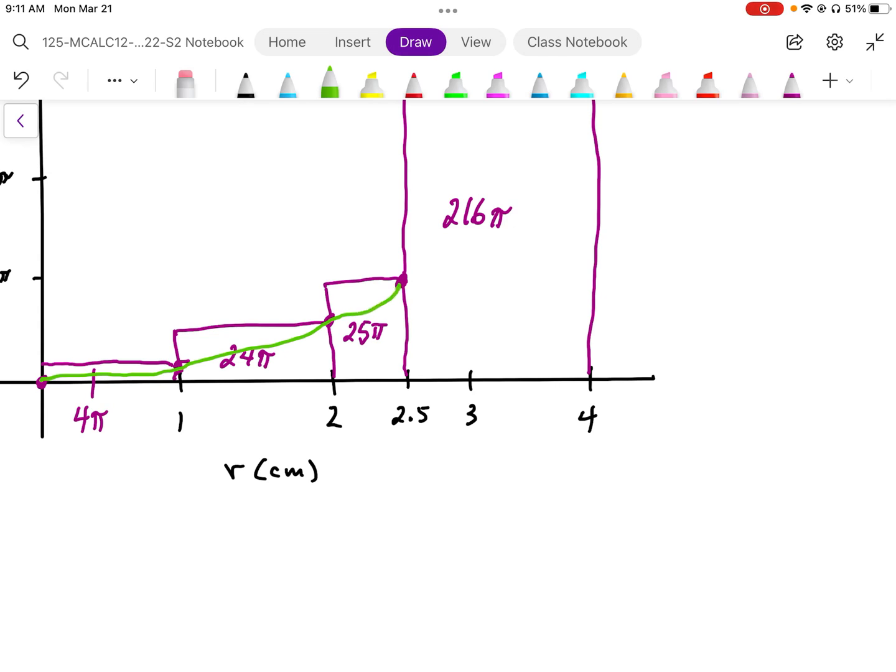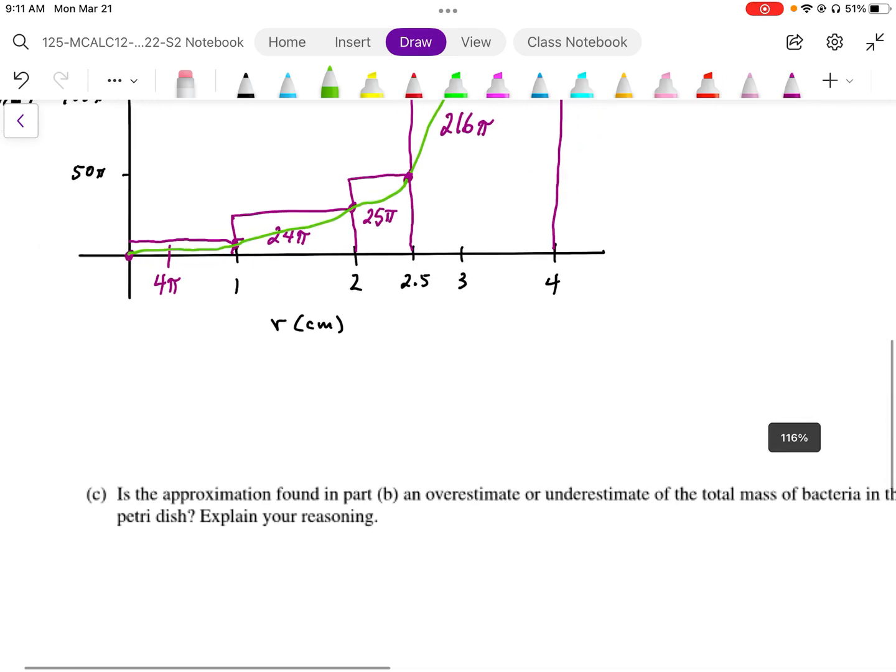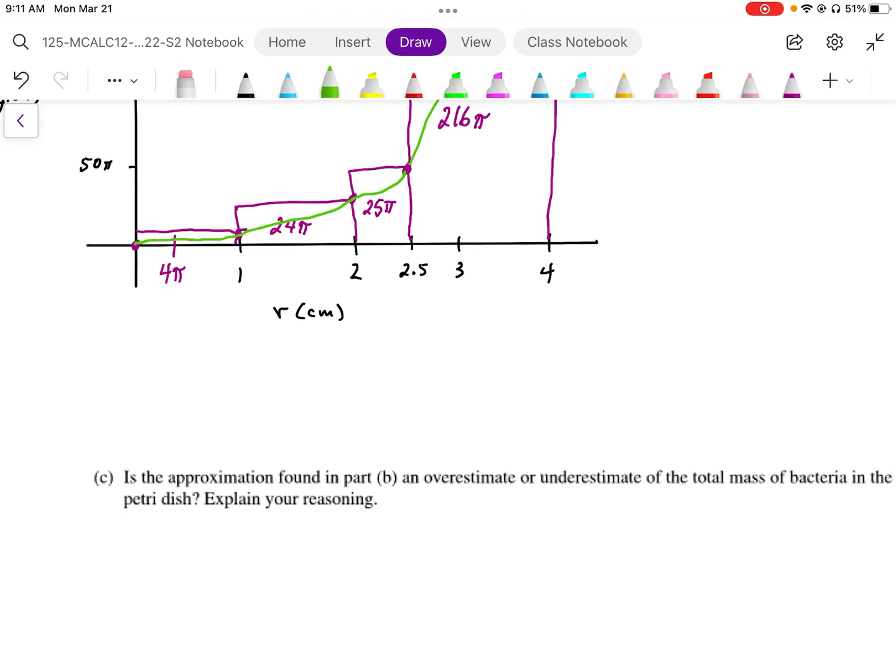It can have different curvature, it can go up like this. But in any case, the area underneath that curve is always going to be less than the purple area that we've drawn. So in this case here, this is going to be an overestimate.